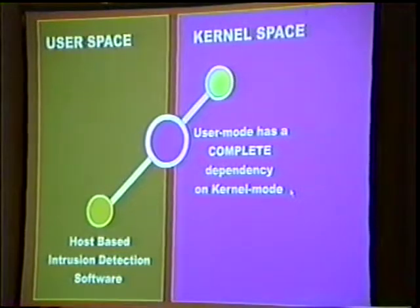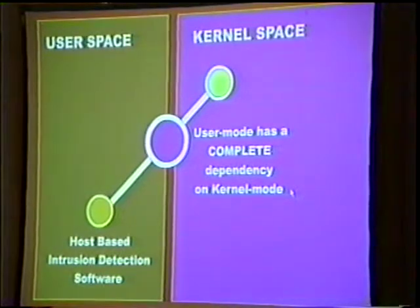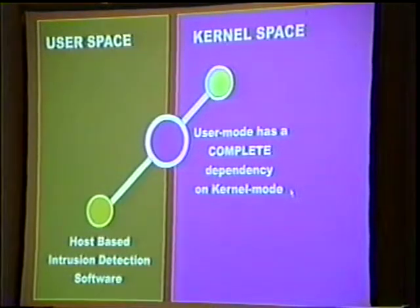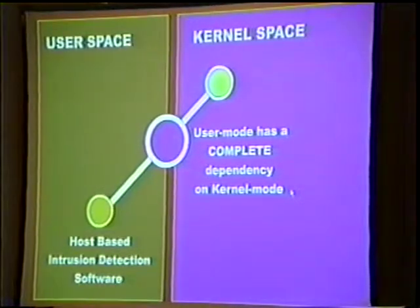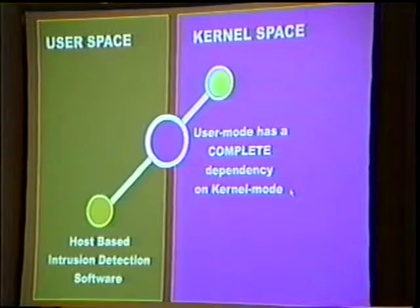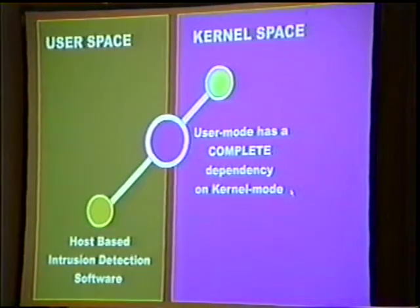Has anybody heard of execute redirection? Execute redirection states simply that you're going to open this file, and I'm going to show you the real file — but if you try to execute this file, I'm going to execute a Trojan file instead. It completely defeats user mode integrity assessment tools. If I have a program going through and doing file hashes of all my files, that's great, but it doesn't work against execute redirection.